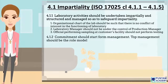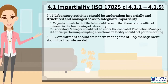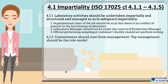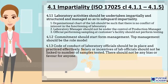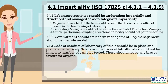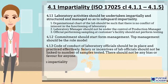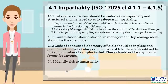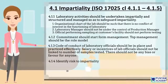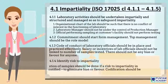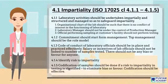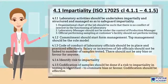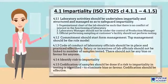The second sub-clause is 4.1.2: commitment should start from management — top management should be the role model. The third sub-clause is 4.1.3: a code of conduct for laboratory officials should be in place and practiced effectively. Salary or incentives of lab officials should not be linked to the number of samples tested, and there should not be any bias or favour for anyone. The fourth sub-clause is 4.1.4: identify risk to impartiality considering the present situation. The fifth sub-clause is 4.1.5: codification of samples should be done if a risk to impartiality in testing is identified — this is important to eliminate bias or favour, and codification should be effective.